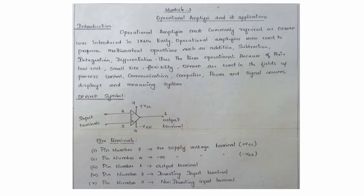Operational amplifier, it is in module 2, first chapter. What is an operational amplifier? Most generally we call it an op-amp. It was introduced in the 1940s and was used to perform mathematical operations like addition, subtraction, integration, differentiation, logarithm, and so on. It is very small, low cost, and flexible, and is used in the fields of process control, communications, measuring systems, displays, etc.